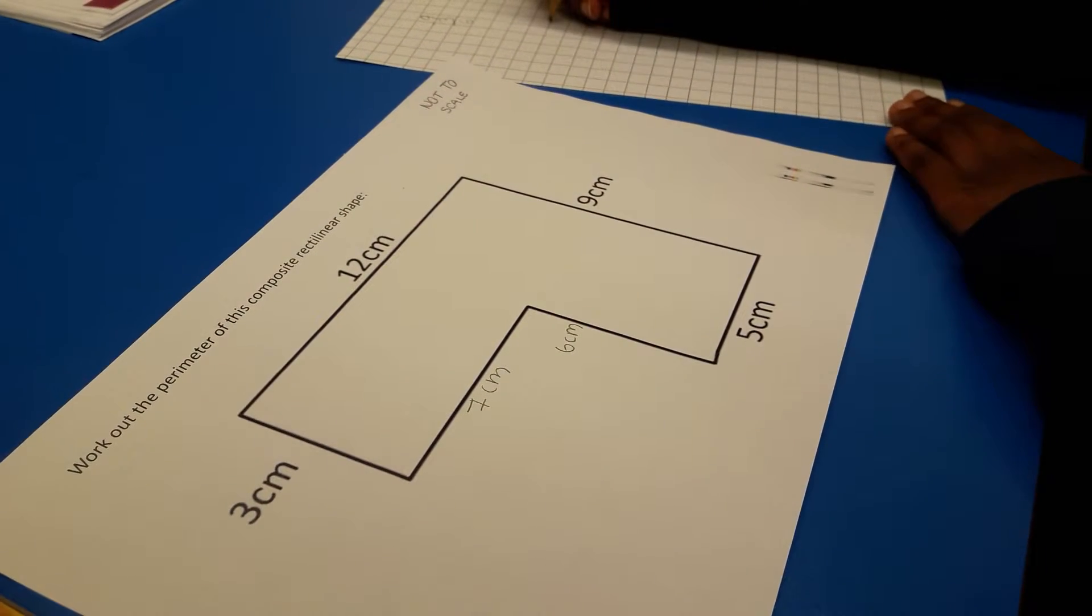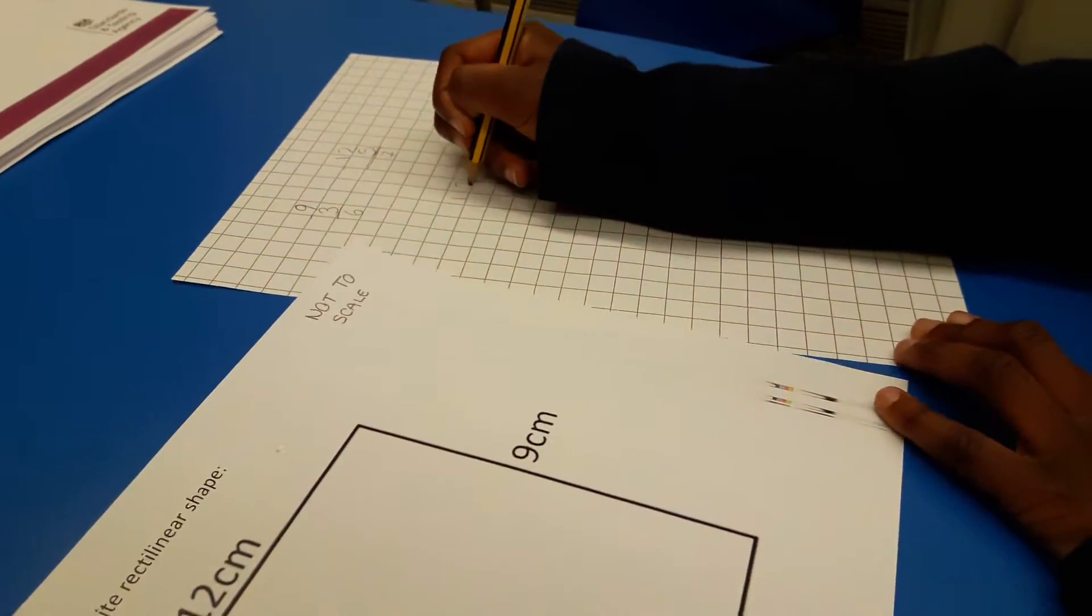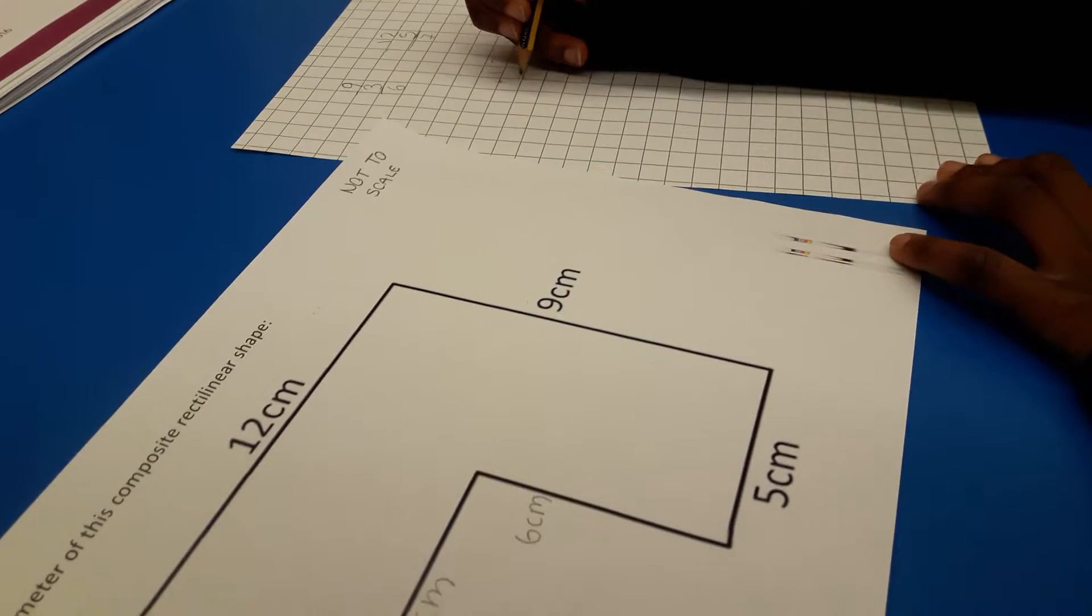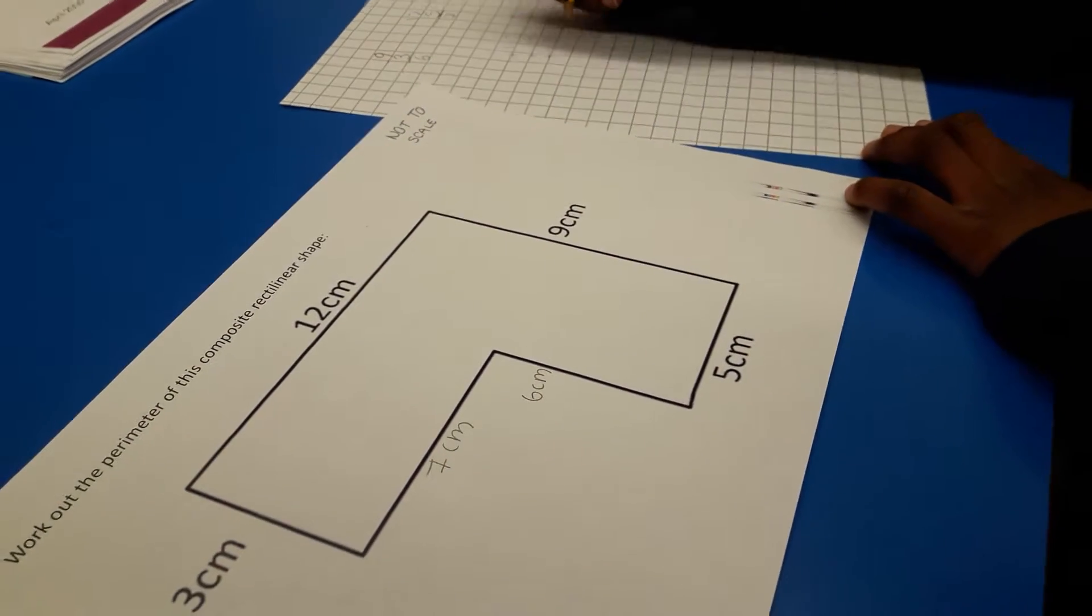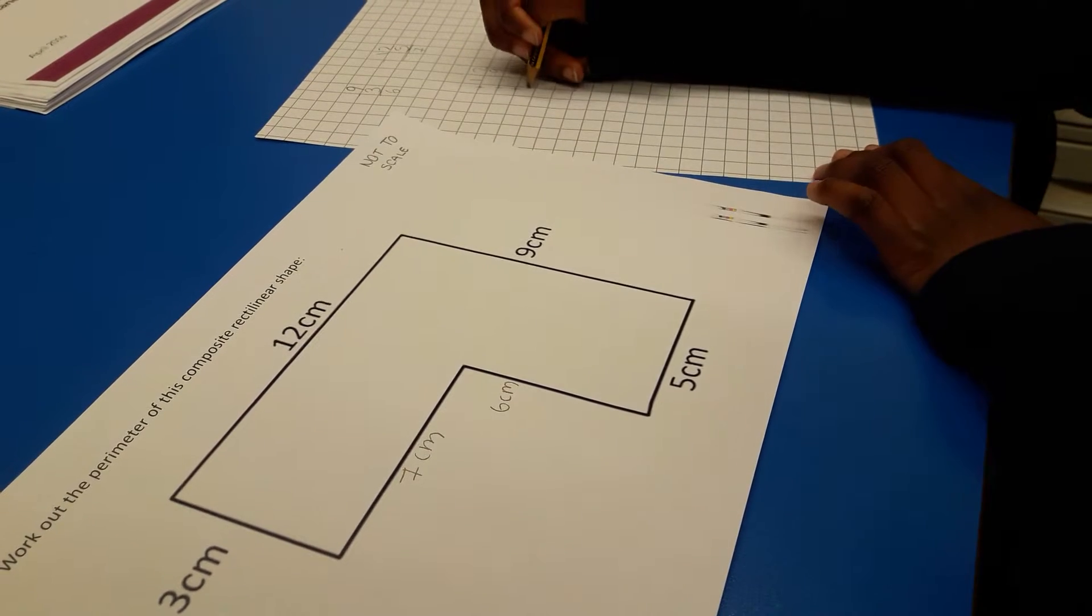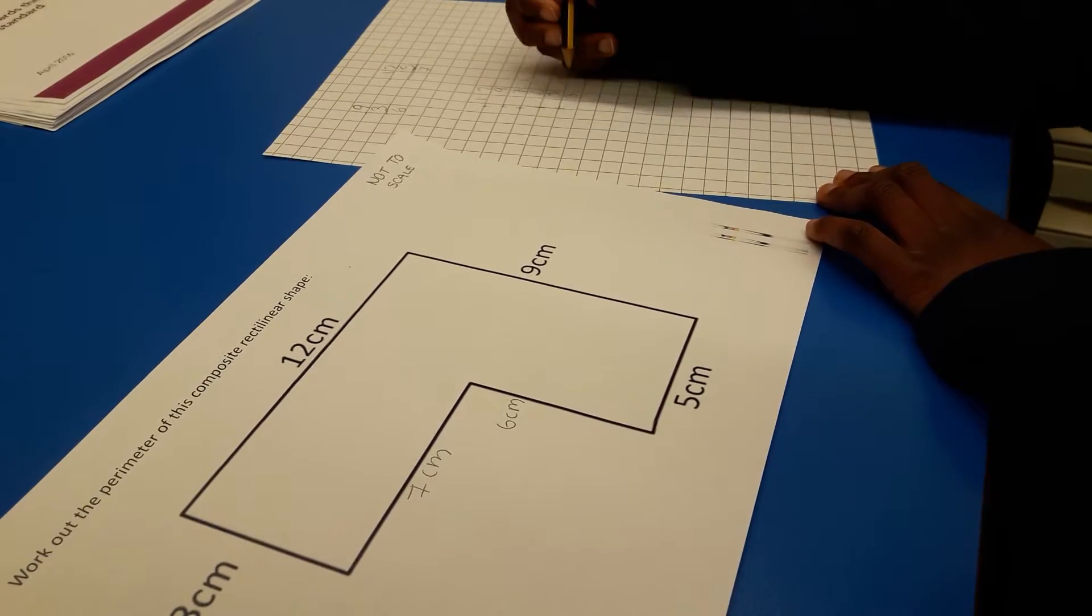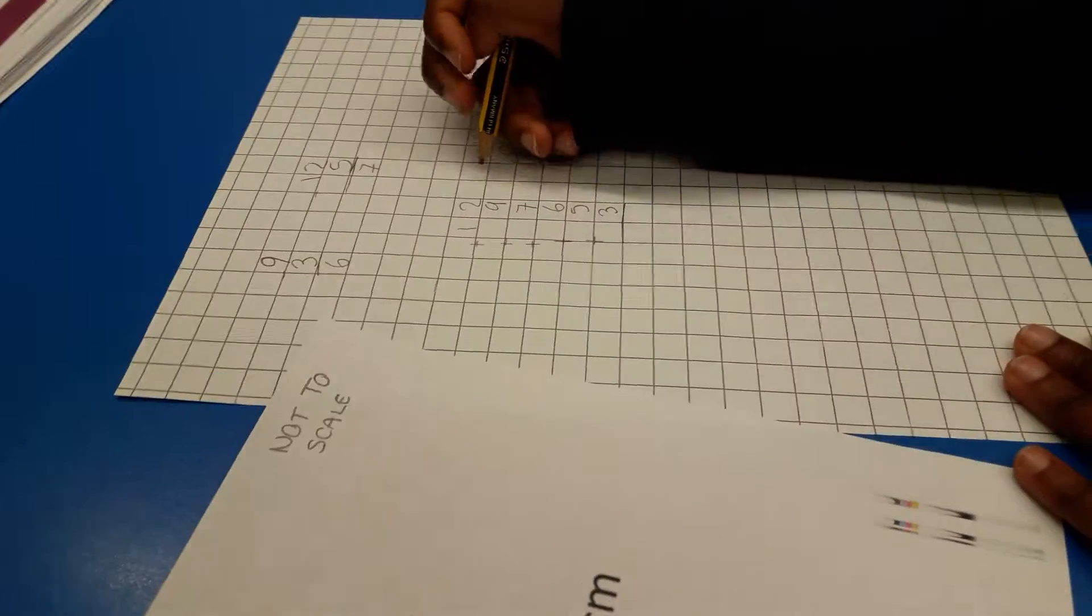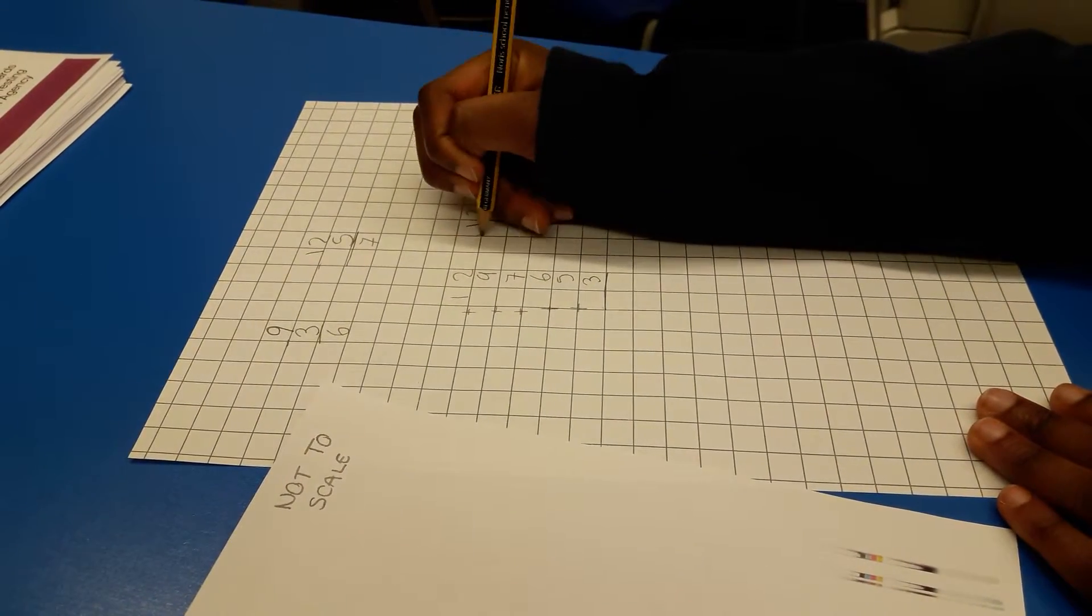And to figure out the perimeter, you need to add all of these numbers together: twelve plus nine plus seven plus six plus five plus three. An easier way to do it is to add them up separately.